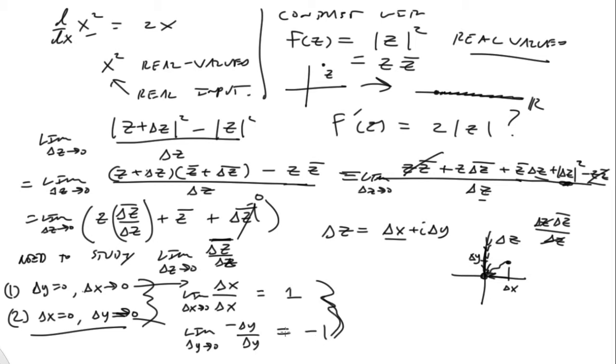So, of course, in this case right here, this becomes delta x over delta x. Because if I set delta y equal to zero, delta z just becomes delta x. So limit delta x goes to zero and the limit, of course, is one. Likewise, if I do this, the limit, but recall, remember that this is the complex conjugate. So that makes it negative i delta y over i delta y. And that's a delta y going to zero limit. And then the answer is negative one. Uh-oh, there's a problem. These do not match up.